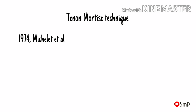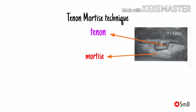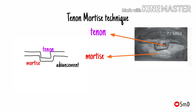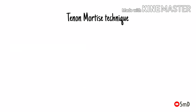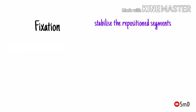A specialized procedure was introduced by Michelet and associates, known as the tenon mortise technique. It is used for either advancement or reduction. A U-shaped monocortical osteotomy is created opposing the tenon. When anterior movement is desired, the tenon is placed in the upper segment and the mortise in the lower movable segment. When posterior movement is desired, the tenon is inverted and placed in the lower mobilizing segment.